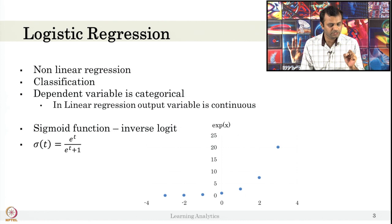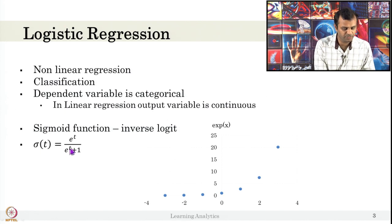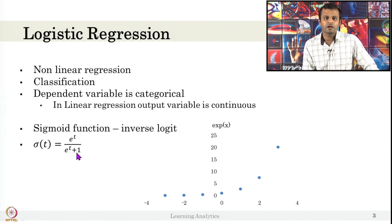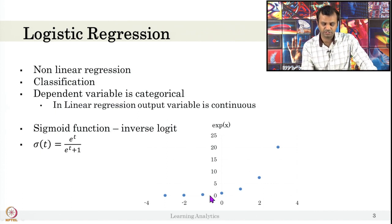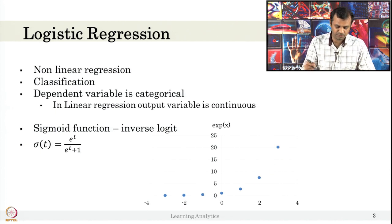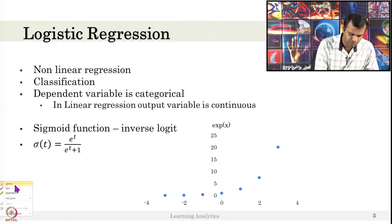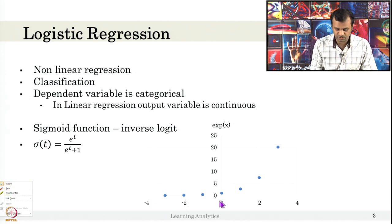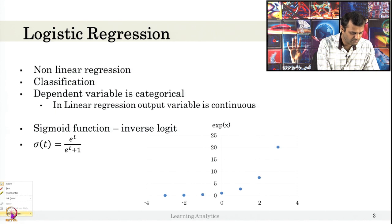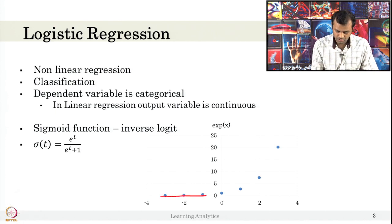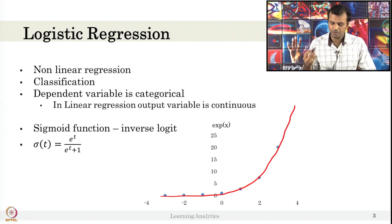Basically, logistic regression is a sigmoid function. What a sigmoid function is: exponential of t divided by 1 plus exponential of t. This is just plotted exponential function to show what exponential function looks like. It will never be 0. For negative infinity, it will be 0, but it rises exponentially. It is exponential function.